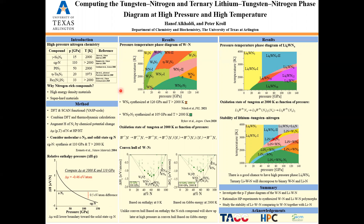Accounting for this chemical potential change at high pressure and high temperature, we computed the tungsten nitrogen phase diagram. All the colors here represent the minimum Gibbs energy structures for the system. By looking at this phase diagram, we can communicate with experimentalists and tell them what the optimum temperature and pressure are to synthesize these materials.